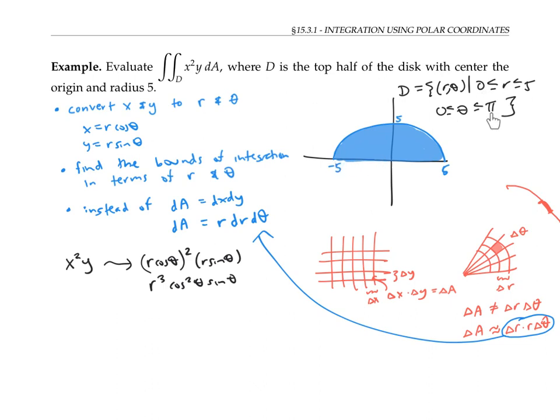The bounds on r and theta become our bounds of integration. R goes from zero to five, and theta goes from zero to pi. I'll copy down the function that I'm integrating. So that's r cubed cosine squared theta sine theta. And then we need to include the area element, which is always r dr dθ for polar coordinates.